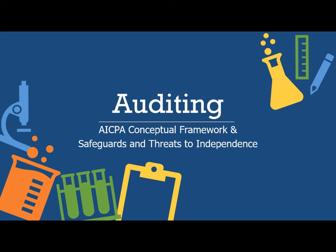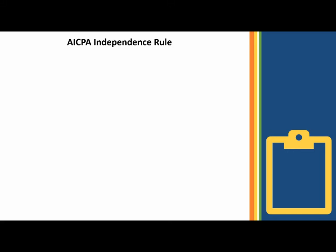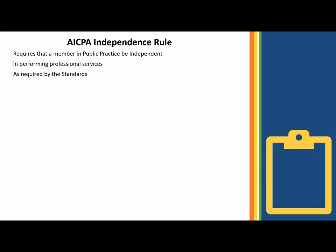In this lecture on auditing, we're going to discuss the AICPA conceptual framework and the safeguards and threats to independence. Before we get into the safeguards and threats, let's talk about the independence rule itself. It requires that a member in public practice be independent in performing professional services, as required by the standards disseminated by the bodies designated by the AICPA.